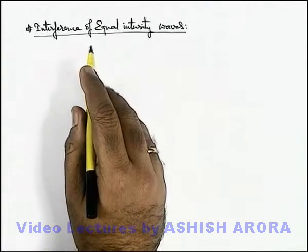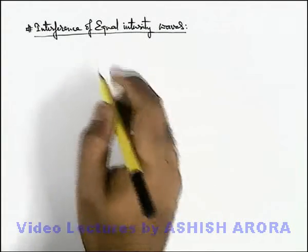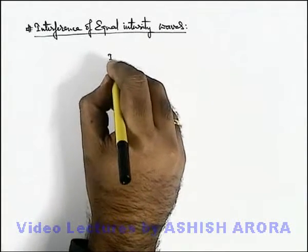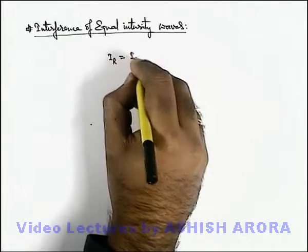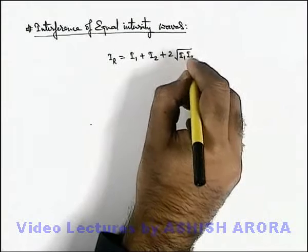Let us talk about the interference of equal intensity waves. As we have discussed in previous section, the resulting intensity at the point of interference is given as I₁ plus I₂ plus 2√(I₁I₂)cosφ.